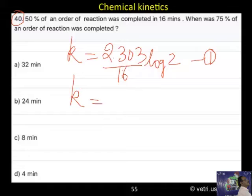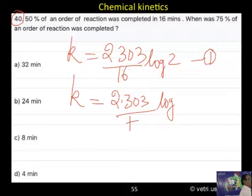Then another K equals 2.303 by T, we have to identify log 100 minus, 100 minus 25, log 4, 2.